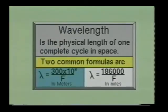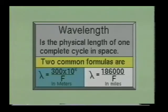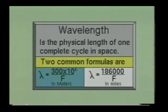The wavelength of an AC sine wave is the actual physical length of one cycle in space. Wavelength is equal to the speed at which electric waves travel through space divided by the frequency in cycles per second. The electric wave will travel at the speed of light, which is approximately 186,000 miles per second or 300 million meters per second. To calculate the wavelength of a wave in meters, you divide 300 million by the frequency in cycles.